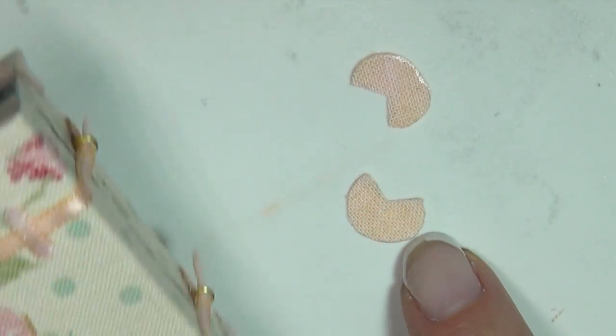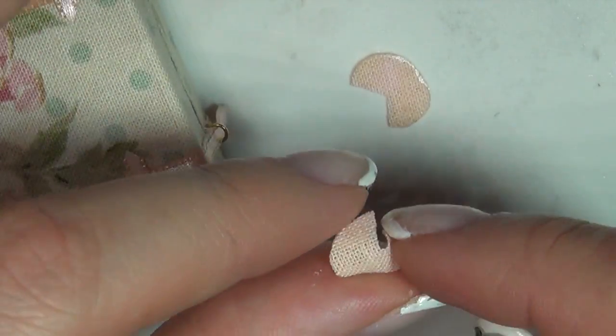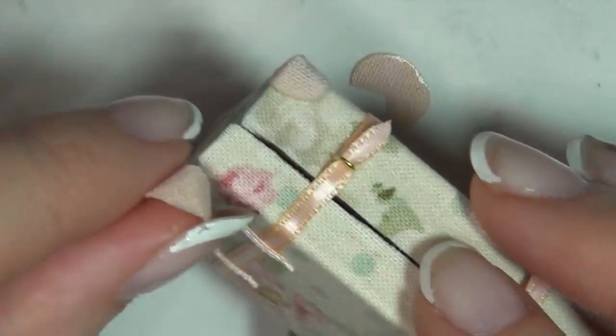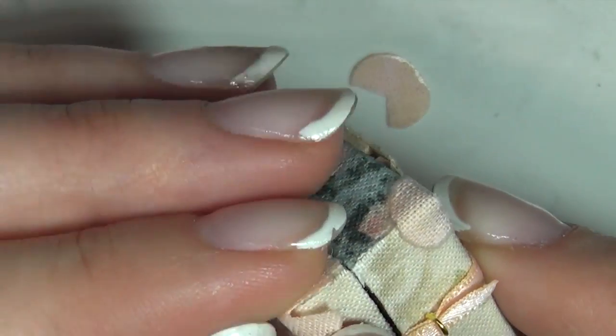For the little corner patches, I use the same markers as before to color some white linen fabric, then cut out a circle with a triangle missing and glue these onto the edges.